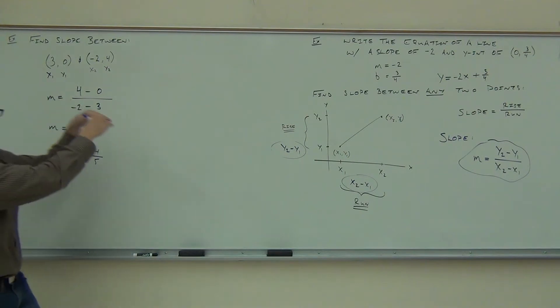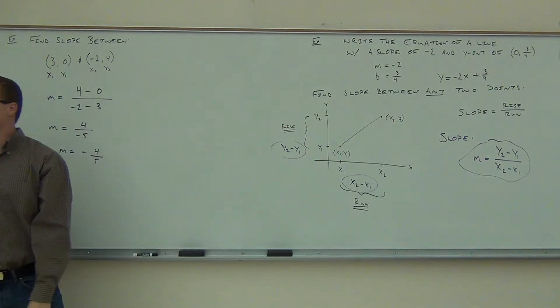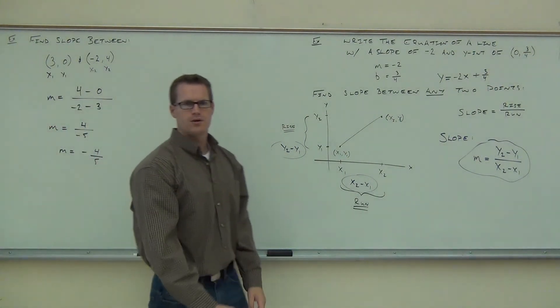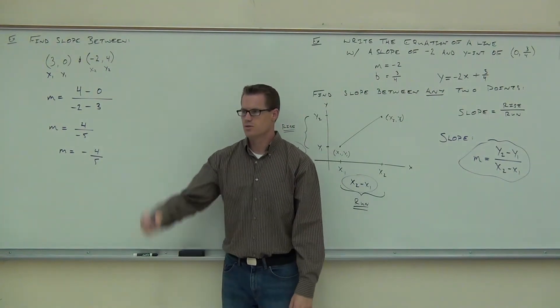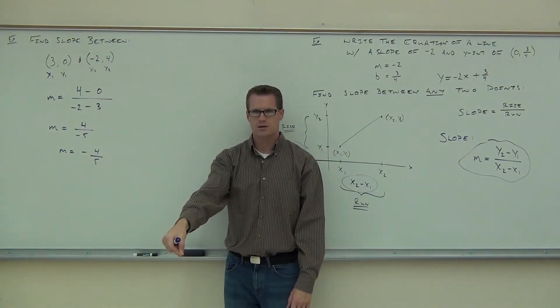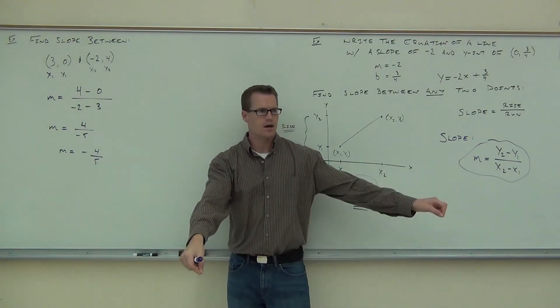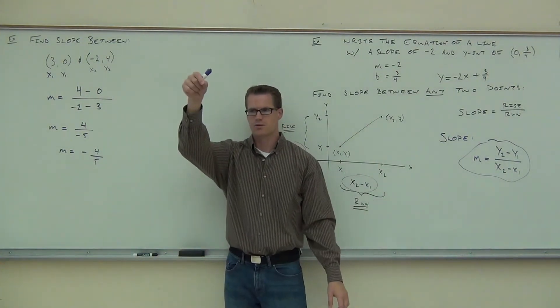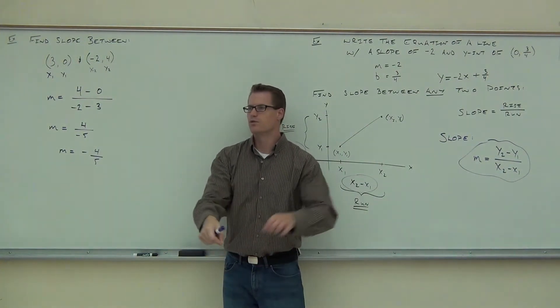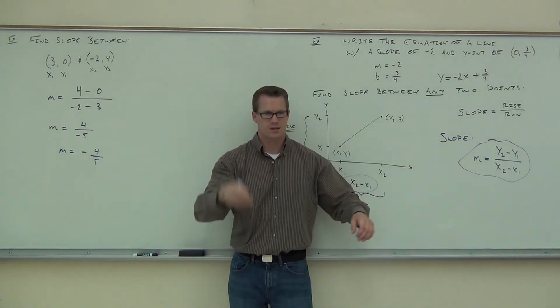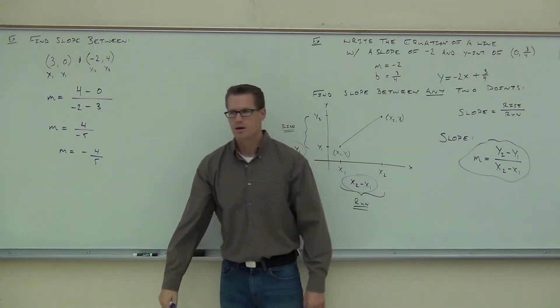This slope is going to be dropping as we go from left to right. What is our rise on this graph? We're going to be dropping 4 and then going to the left or right? 5. That's how we go from point to point. Down 4 over 5, down 4 over 5. It's like a staircase.